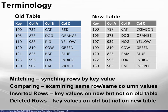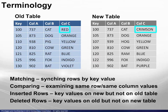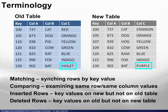To begin, the tables to be compared are referenced as the old and new tables. Matching is the process of syncing rows by key value. When two rows are matched, the comparing — meaning examining same row, same column values — may be done.